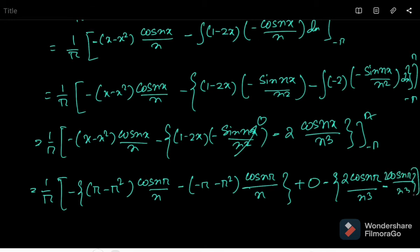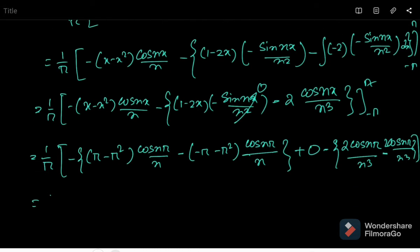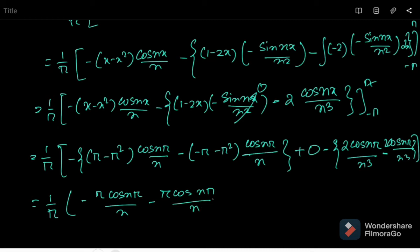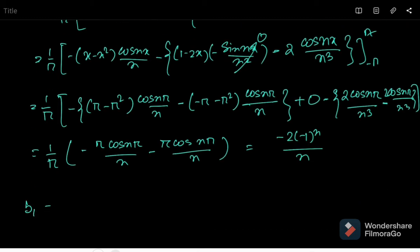The remaining terms give minus π cos(nπ)/n minus π cos(nπ)/n, so ultimately bₙ = 2(-1)ⁿ / n. So b₁ = 2/1, b₂ = minus 2/2, b₃ = 2/3, b₄ = minus 2/4, and so on.